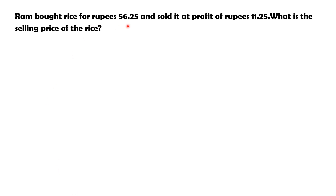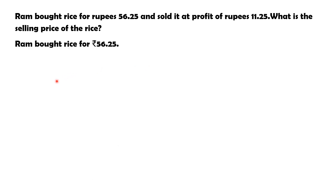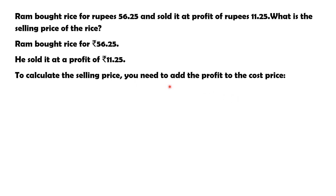Here is one more question. Ram bought rice for Rs.56 and 25 paise and sold it at a profit of Rs.11 and 25 paise. What is the selling price of the rice? He bought it for Rs.56.25 and made a profit of Rs.11.25. So here we need to find the selling price of the rice. To calculate the selling price, we need to add the profit to the cost price.